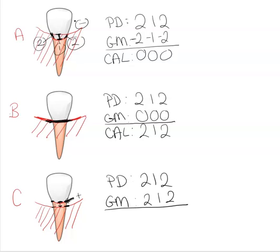Because there is recession we have to add all these numbers. So we're going to add all these numbers. And what is our clinical attachment loss? It's 4, 1 plus 1 is 2, 2 plus 2 is 4.